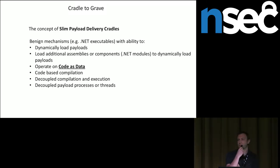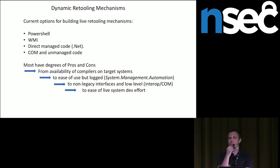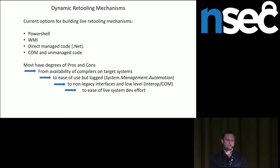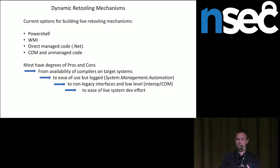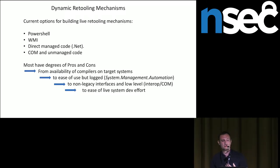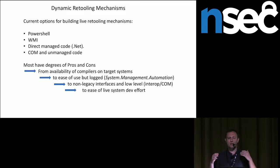So what are the current options? Normally we default to PowerShell — it's available, it's installed, and it's used heavily from both defensive and offensive perspectives. We've got WMI and unmanaged code where you can code towards a direct Windows API. You also have direct managed code, which is .NET. All of these options have pros and cons — availability of compilers on the target, ease of use and logging, for example for PowerShell through the automation API. And there's the question of how well you can actually develop in a live environment.